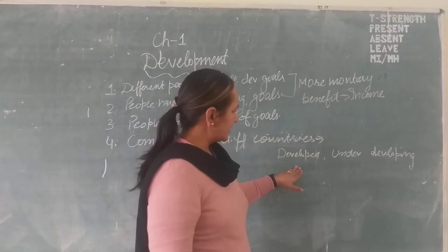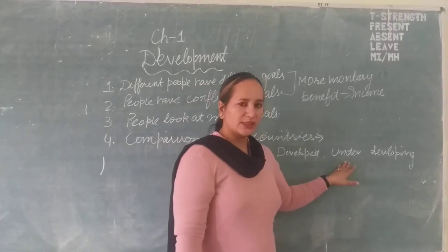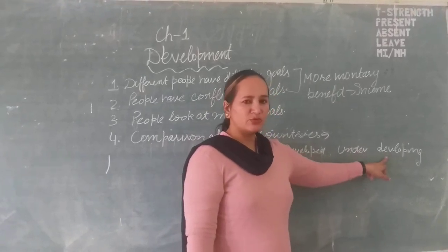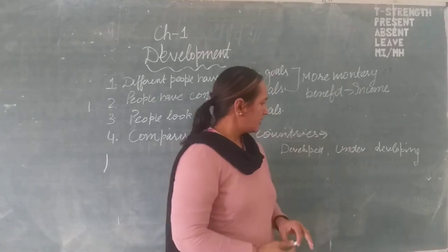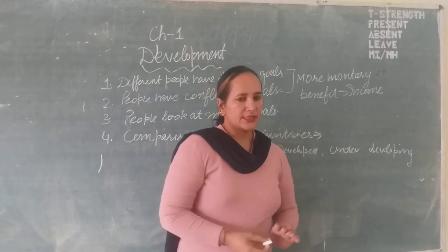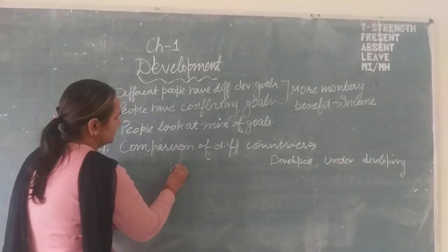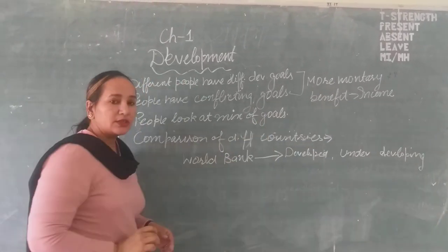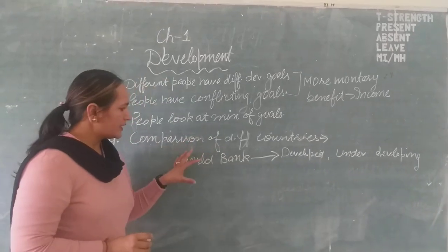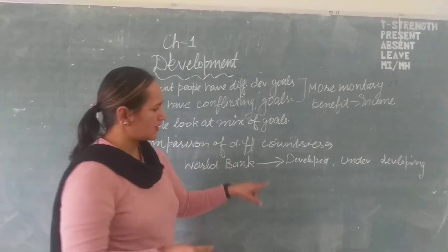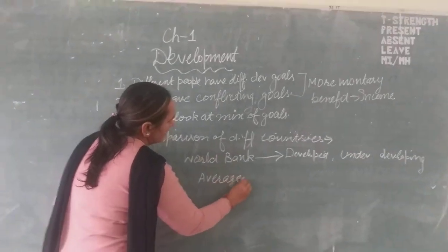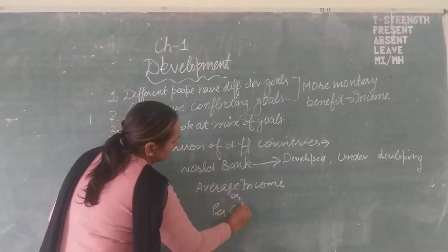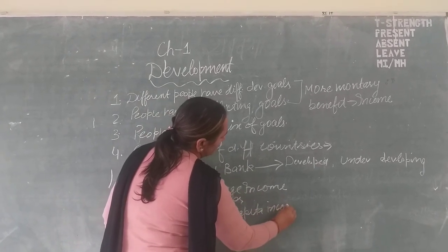Developed countries like Canada and America; underdeveloped countries like Sri Lanka and Nepal; and developing countries like Pakistan and India. Now, to give these ranks to different countries, the World Bank — an international organization — gives these ranks on the basis of their average income. Average income or per capita income is the same thing.